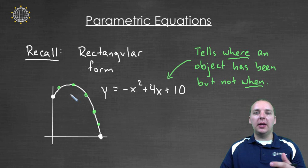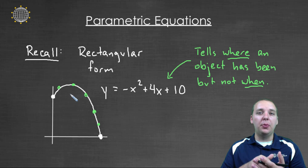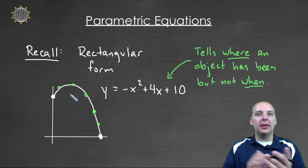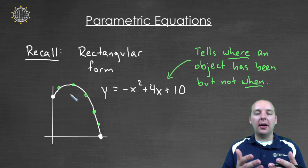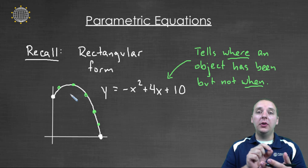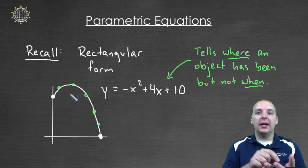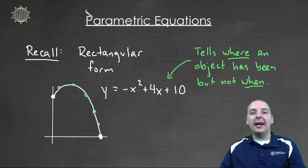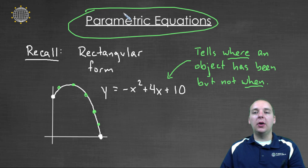But for so many real life applications, we need to know not only when it's been at a point and not only what point it's been at, but also when it's been at that point. Think of all the applications like that, like projectile motion is probably the biggest one I can think of off the top of my head. You have a projectile. I don't just want to know what path it took. I want to know where it is after one second and what location it's at after two seconds and so on and so forth. And that's what parametric equations help with.